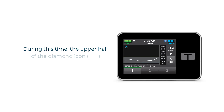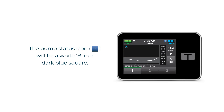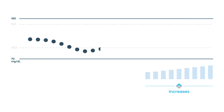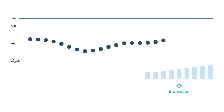During this time the upper half of the diamond icon will be blue and the pump status icon will be a white B in a dark blue square. This icon is different from a personal profile basal rate, which is a black B in a light blue square.